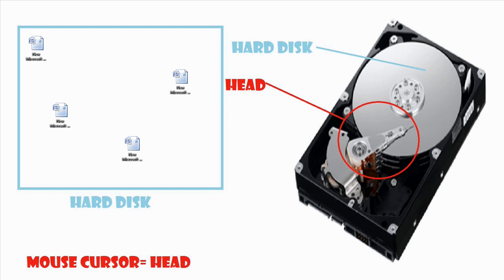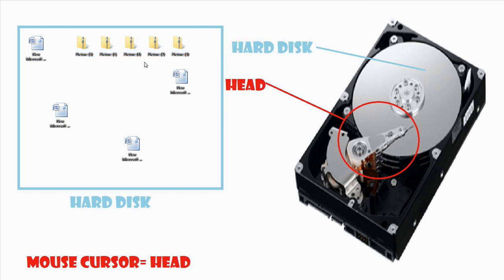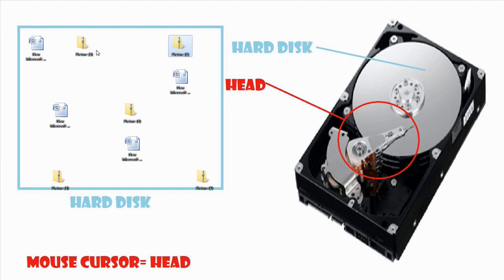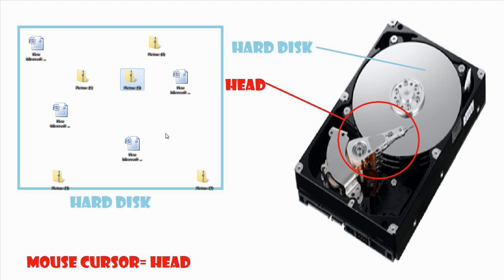Now let's say we want to edit a picture. Let's bring in some icons that represent the data of a picture, and we're going to edit it with Photoshop. So we put it on the hard disk and start editing. The head reads the data on the hard disk like this — follow my cursor — zip, zip, zip, zip, zip.